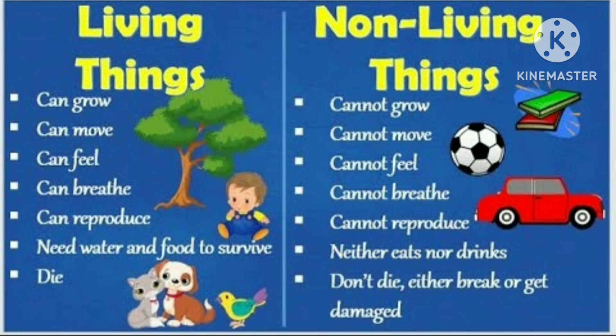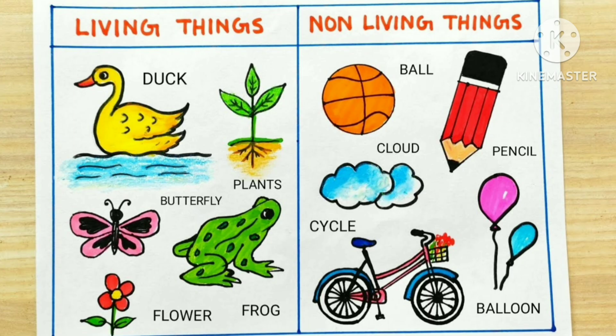Non-living things cannot grow, cannot move, cannot eat, cannot breathe, cannot reproduce, neither eat or drink, and they don't die or get damaged. Let's see some examples. Living things: duck, plants, butterfly, frog, flowers. Non-living things: ball, cloud.